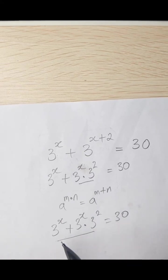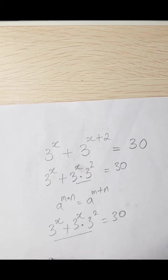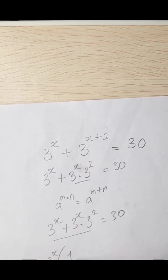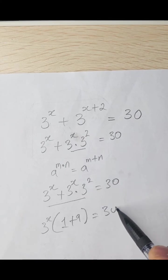3 raised to the power x, we have 3 raised to the power x on both sides. So we have 3 raised to the power x into 1 plus 3 squared is 9 equals 30.